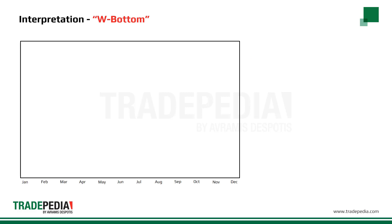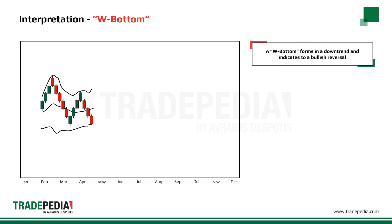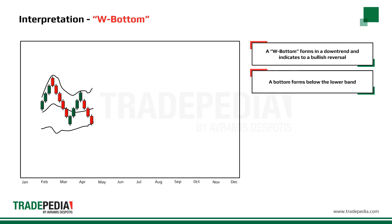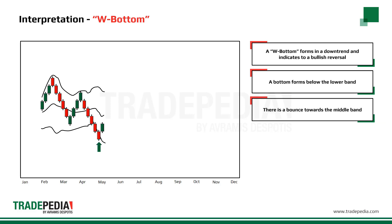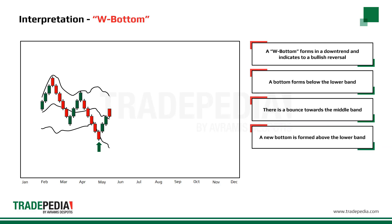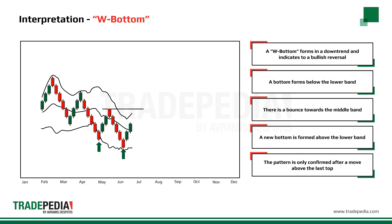One of the signals from Bollinger Bands is a W bottom. The W bottom forms in a downtrend and indicates a bullish reversal. First, a bottom forms below the lower band. Then there is a bounce towards the middle band, and then a new bottom is formed above the lower band. The pattern is confirmed after a move above the last top.